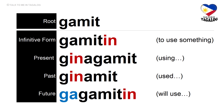Root word: gamit. Infinitive form: gamitin — meaning to use something. Present tense: ginagamit — using something. Past tense: ginamit — used something. Future tense: gagamitin — will use something.